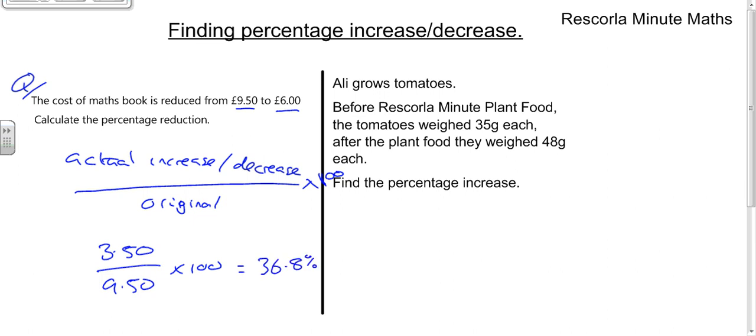Let's do the next one in exactly the same way. This one is going to be find the percentage increase. So Ali grows tomatoes. Before using plant food, a good plant food I can wholeheartedly recommend, the tomatoes weighed 35 grams each. After the plant food, they weighed 48 grams each.